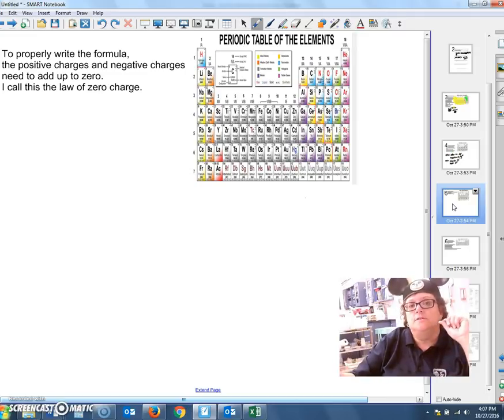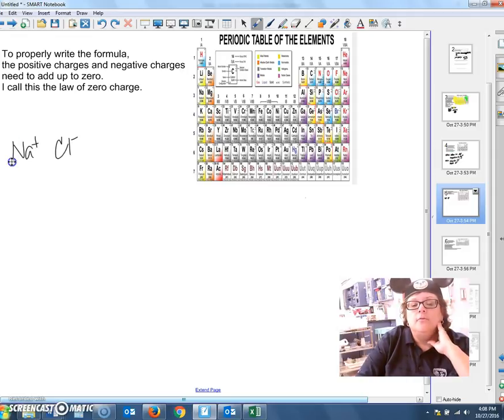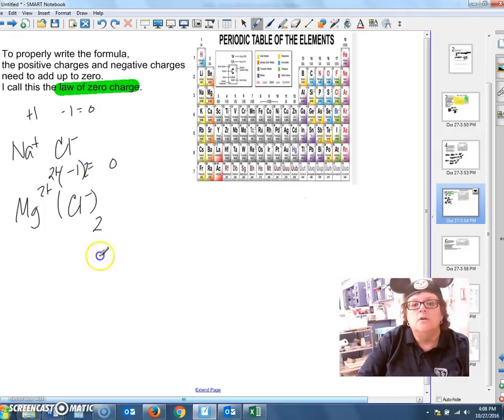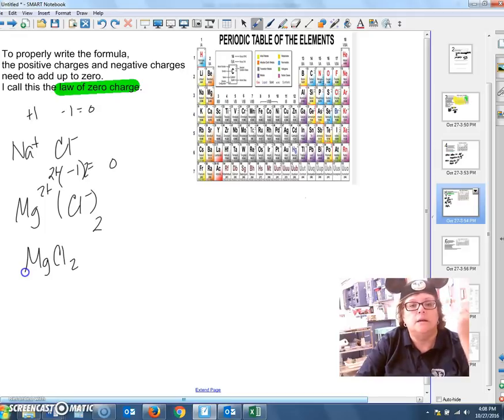Now, if you want to write the formulas, we have to get all of our charges to add up to zero. We just talked about sodium and chlorine. Sodium has a plus one charge. Chlorine has a negative one charge. If we add those together, they add up to zero. I call this the law of zero charge. What if I want magnesium to bond with my chlorine? Two plus minus one does not add up to zero. I need two chlorines. Now I have two plus and a negative one times two. Two minus two is zero. So we would write that MgCl2, magnesium chloride.